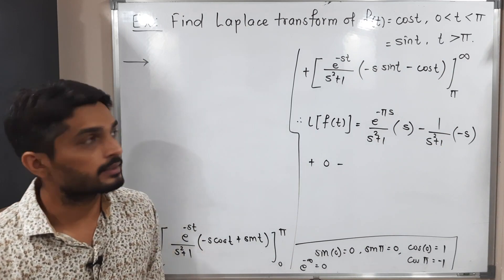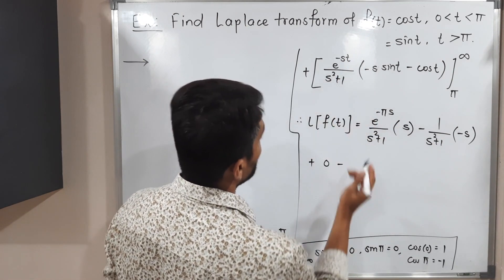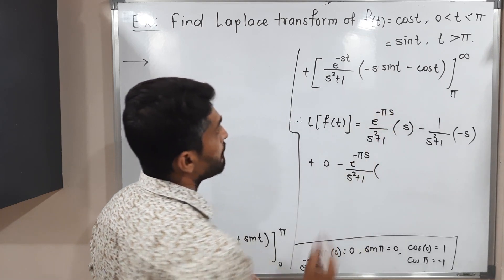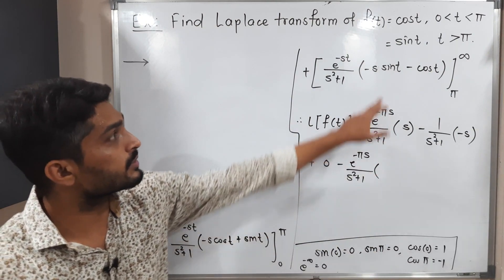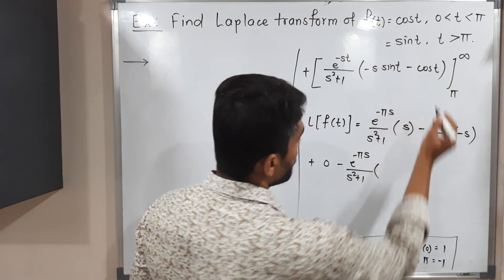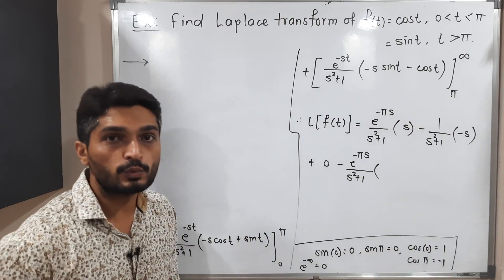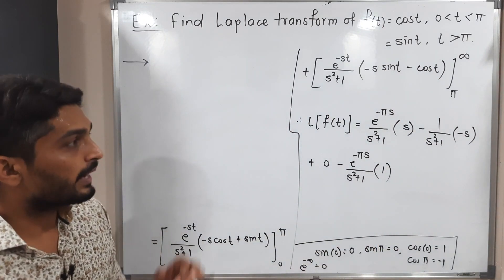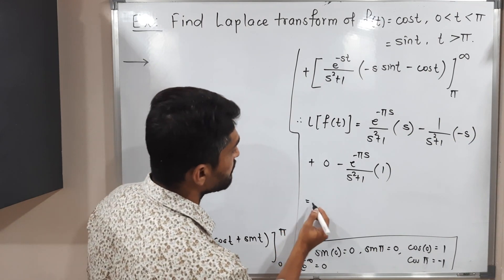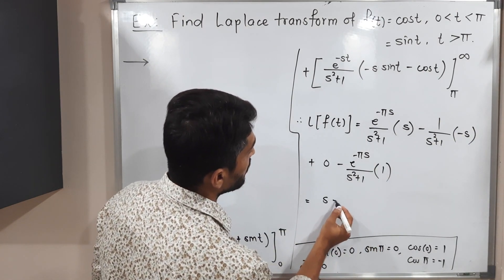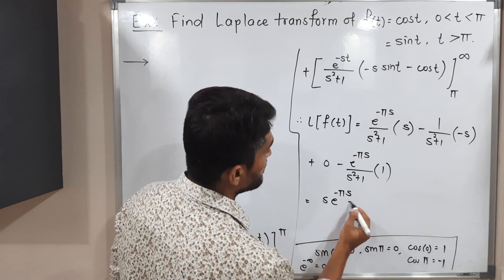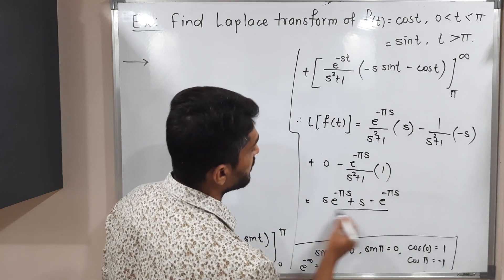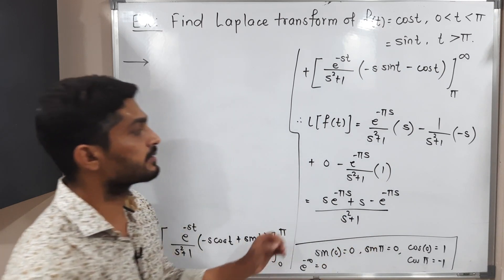Now we put the lower limit t = π in the second integral: e^(-πs) divided by (s² + 1). Sin(π) is 0 so that term vanishes. Cos(π) is minus 1, so minus minus 1 gives plus 1. Simplifying all terms together, with common denominator s² + 1, we get s·e^(-πs) minus e^(-πs), all over s² + 1, which is the required Laplace transform.